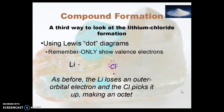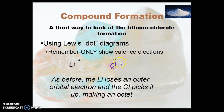Here's a third way to do it, using Lewis dot structures. Remember, they only show the valence electrons. So the lithium loses its outer orbital electron, and the chlorine picks it up. And again, we have a plus charge here and a minus charge there. It is not necessary to show the inner core electrons on either of these ions.